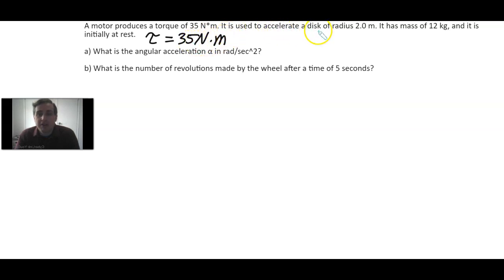It's used to accelerate a disk, so α is not zero. We know it's a disk of radius 2 meters, so r = 2.0 meters. We need the rotational inertia of a disk. It's a solid body, an extended object. The equation is I = ½mr². That's also the same as a solid cylinder. We also know the mass is 12 kilograms.